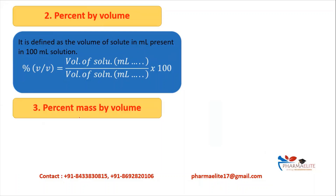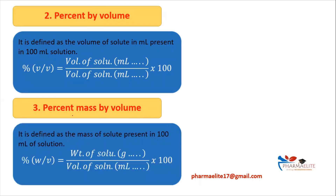The next term is percent mass by volume. It is defined as the mass of solute present in 100 ml of solution. It is denoted by percent W/V, and its formula is weight of solute in grams upon volume of solution in ml, into 100.